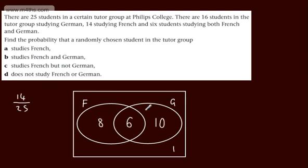Studying French and German, well that's the intersection, so that's going to be 6 over 25.